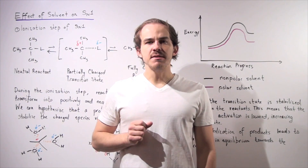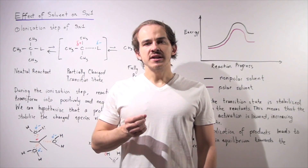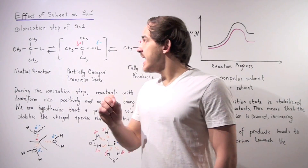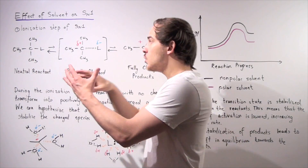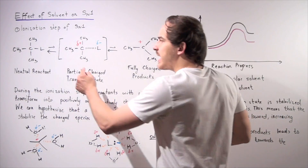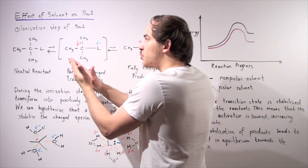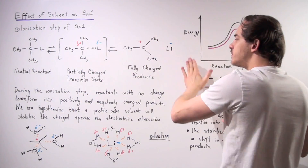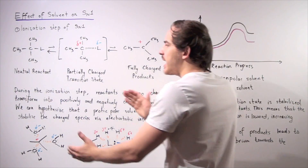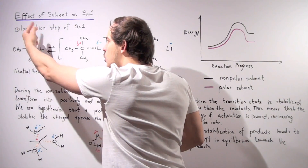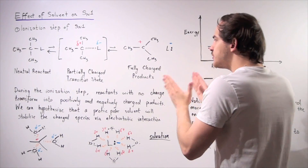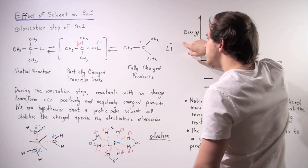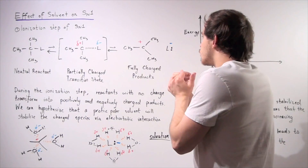Let's examine how a solvent can stabilize an SN1 reaction. We begin by recalling the first step of our reaction, known as the ionization step. In this step, our substrate dissociates into two products. The bond between carbon and the leaving group breaks — the leaving group takes the two electrons — and we go from a neutral reactant with no net charge to two fully charged products: a carbocation with a positive charge and a leaving group with a negative charge.